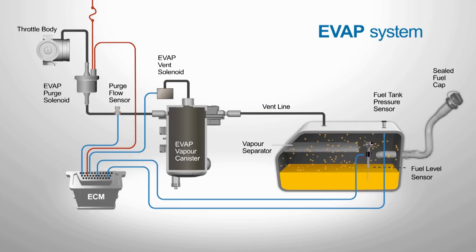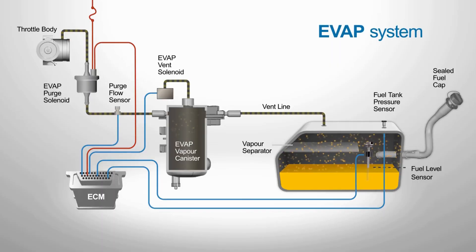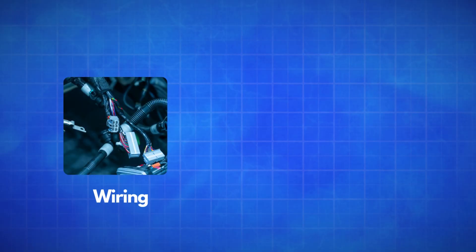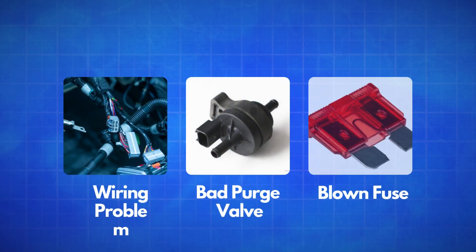The EVAP system is designed to prevent fuel vapors from escaping into the atmosphere, and the purge valve plays a crucial role in this process. But when there's a problem — like a broken wire, a faulty purge valve, or even something as simple as a blown fuse — the PCM can't properly control the valve.